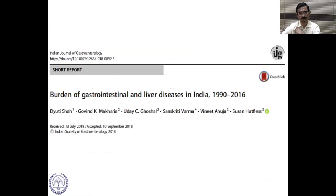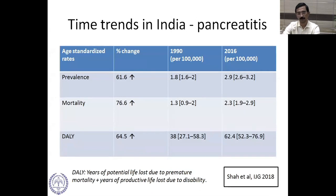The incidence is 5 to 30 per 100,000 and the case fatality rate is approximately 5%. Looking at the Indian data from the Indian Journal of Gastroenterology in 2018, which examined the burden of GI and liver diseases in India, comparing 1990 and 2016, the largest change in prevalence, mortality, and DALYs was in pancreatitis compared to any other disease. That shows how significant this problem is in India.